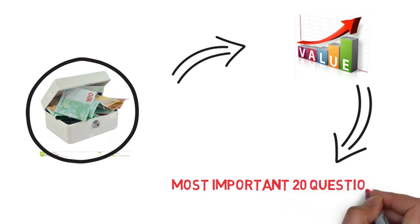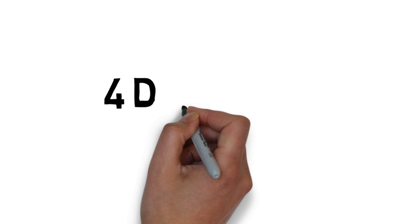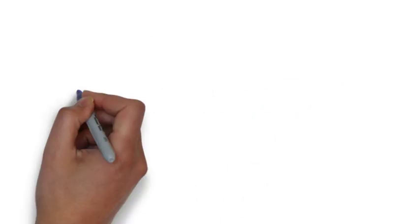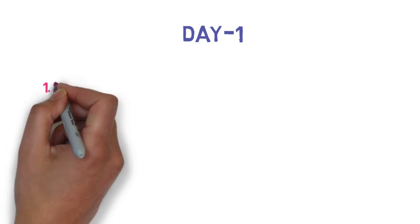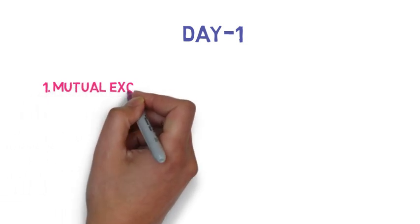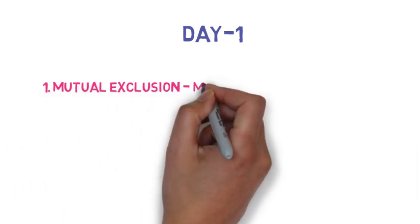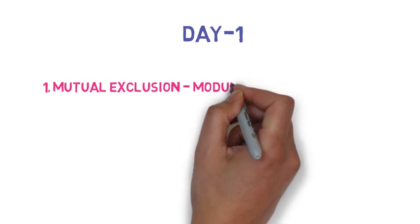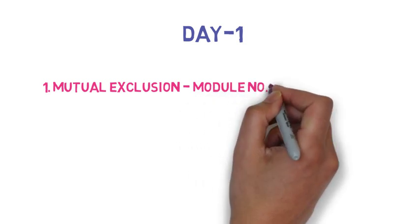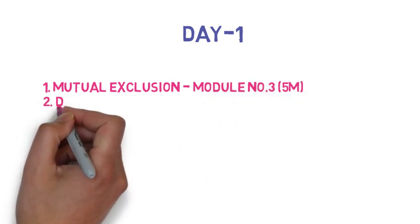This is divided into a 4-day plan. The first question is: what is mutual exclusion? Explain its significance. This is a 5-mark purely theory question.